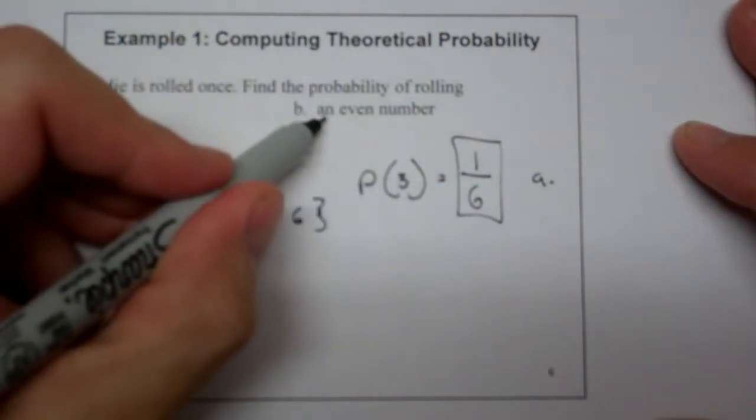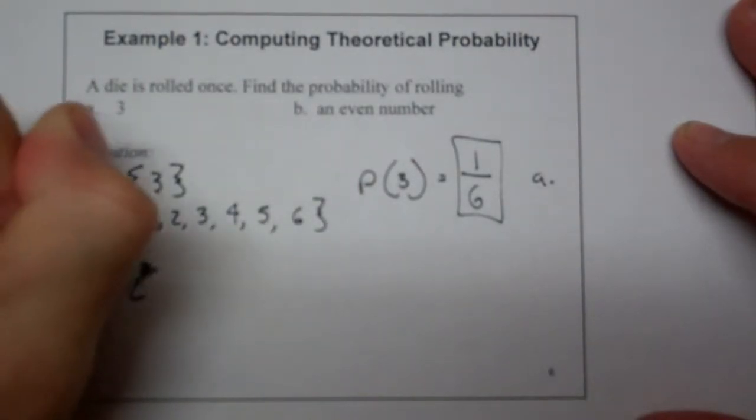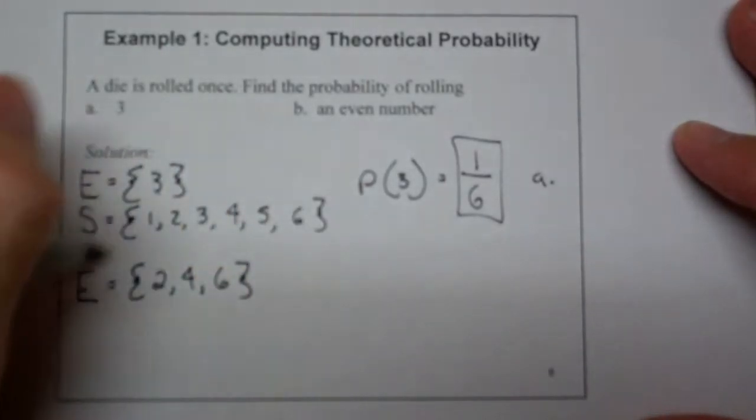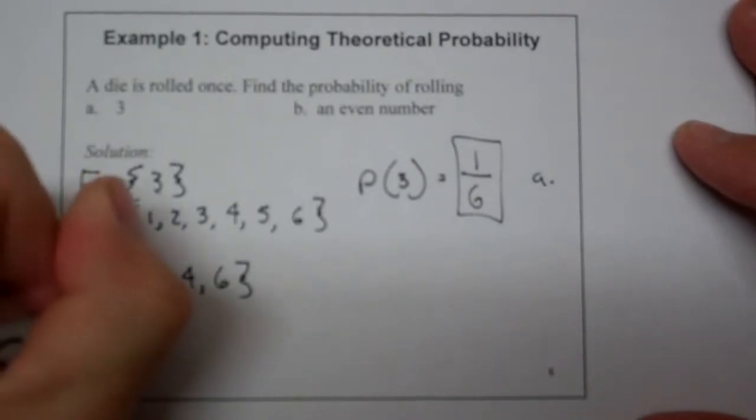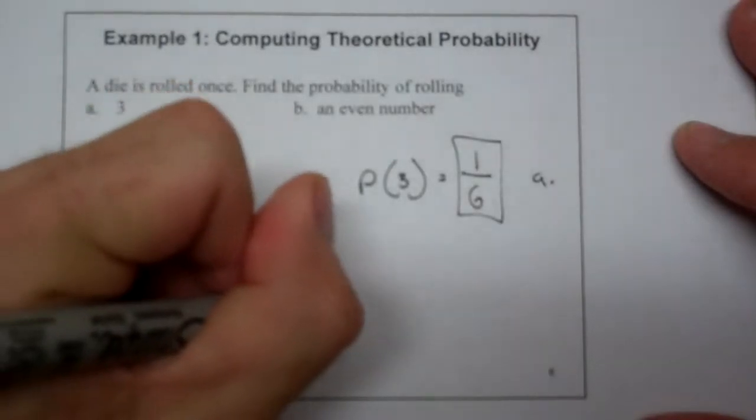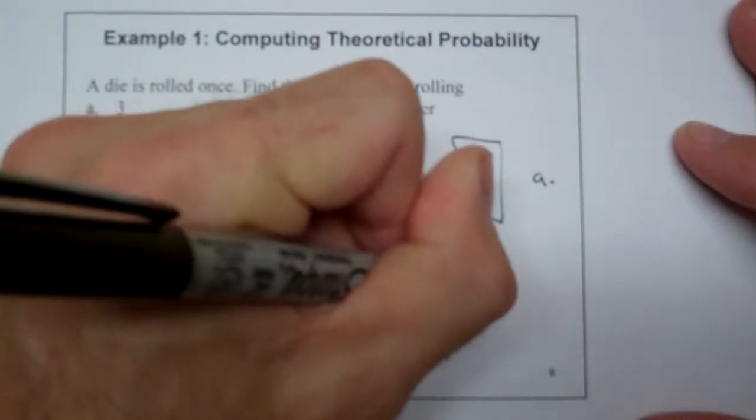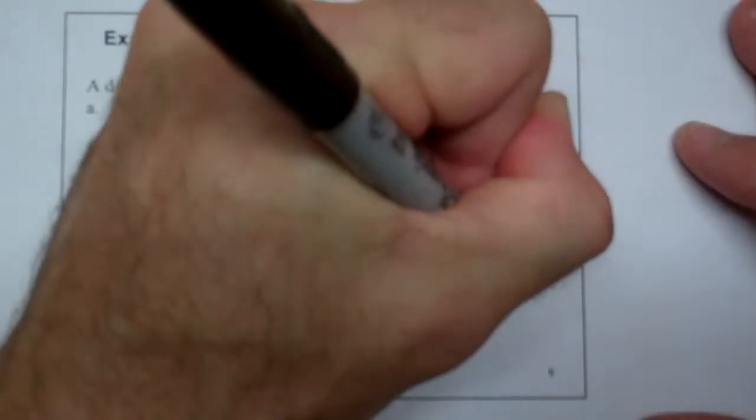Now, what about an even number? Well, now the event space is two, four, and six. The sample space is still the same six-sided die, one, two, three, four, five, six. And so the probability of an even number coming up is going to be three over six, which is one-half. And that's the answer to B.